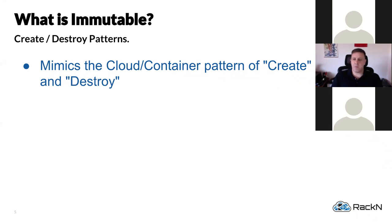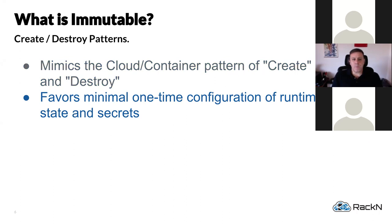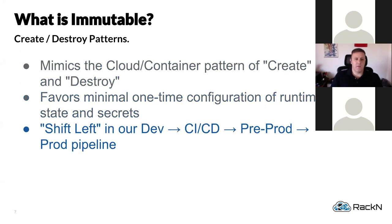It should be noted that simply defining something as immutable doesn't mean the image or thing being deployed needs zero configuration. You still need one-time configuration of basic runtime information — things like IP address, DNS servers, NTP servers, the cluster to join, secrets injected into the application, or a join command. But typically that's a one-and-done pattern at instantiation of the image or service being created — not a continuation of patch, update, patch, update.